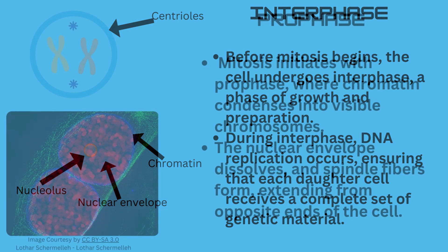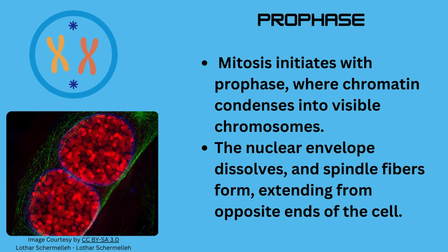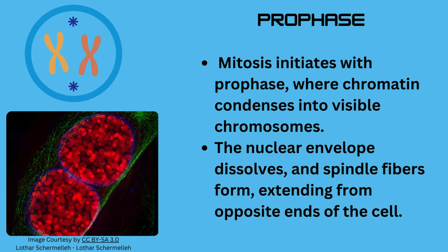Second is prophase. Mitosis initiates with prophase, as you can see in the diagram, where chromatin condenses into visible chromosomes. The nuclear envelope dissolves, and spindle fibers form, extending from opposite ends of the cell.